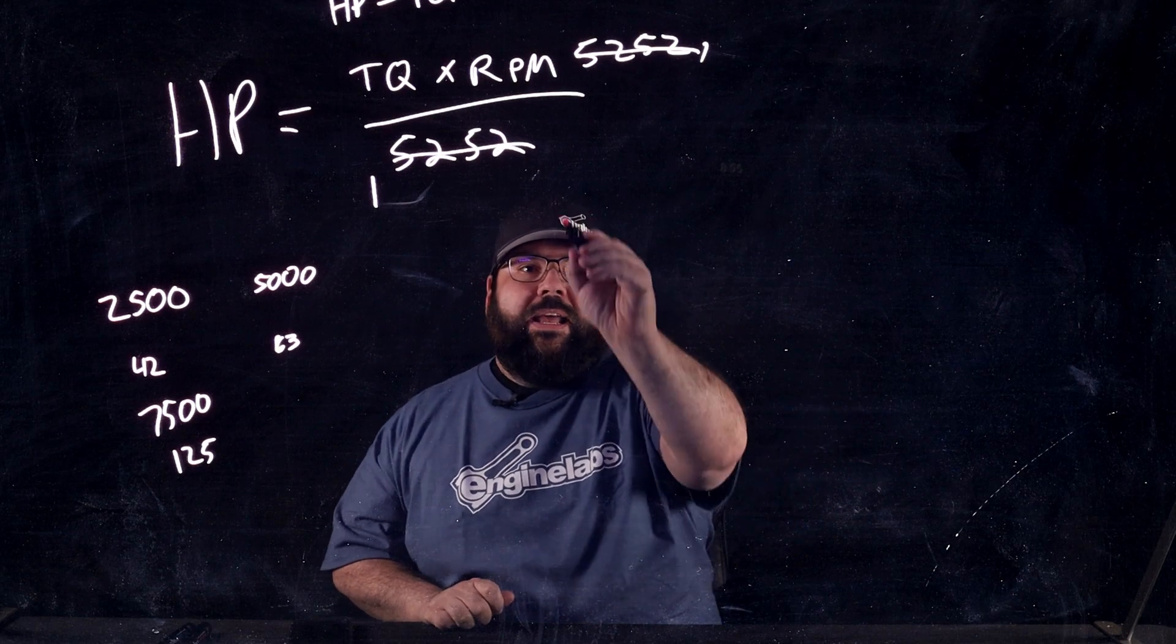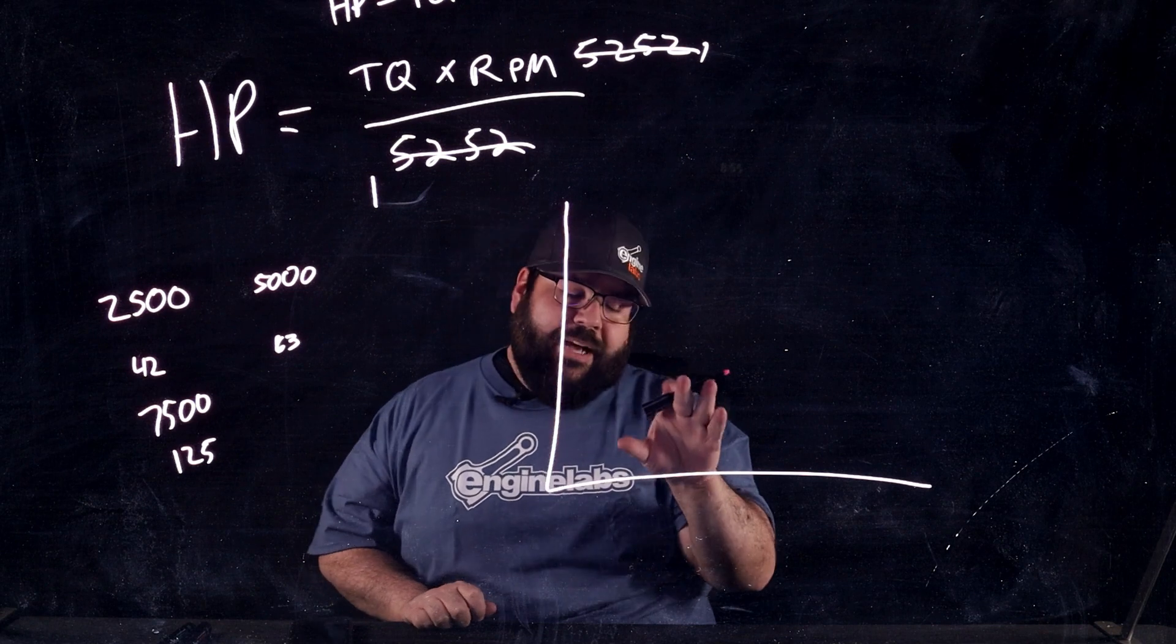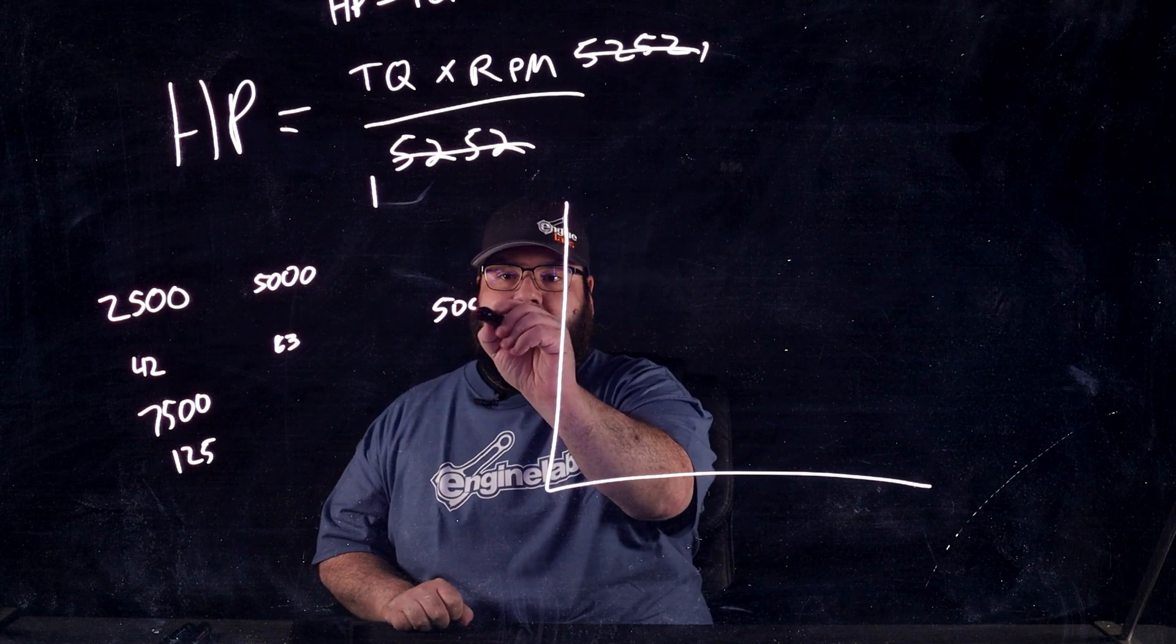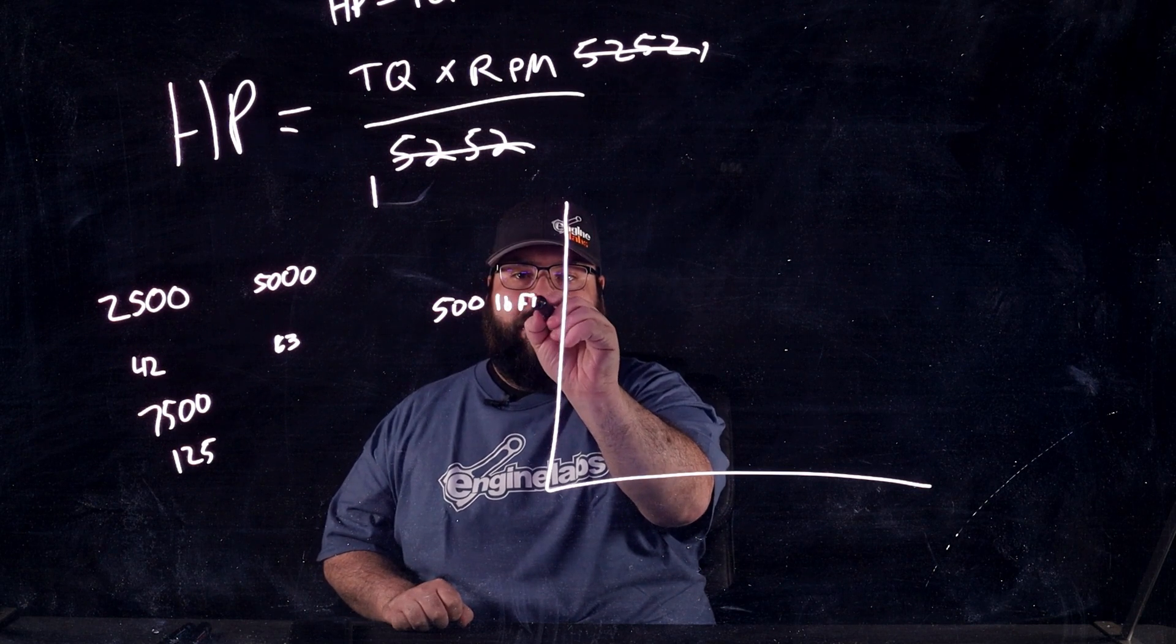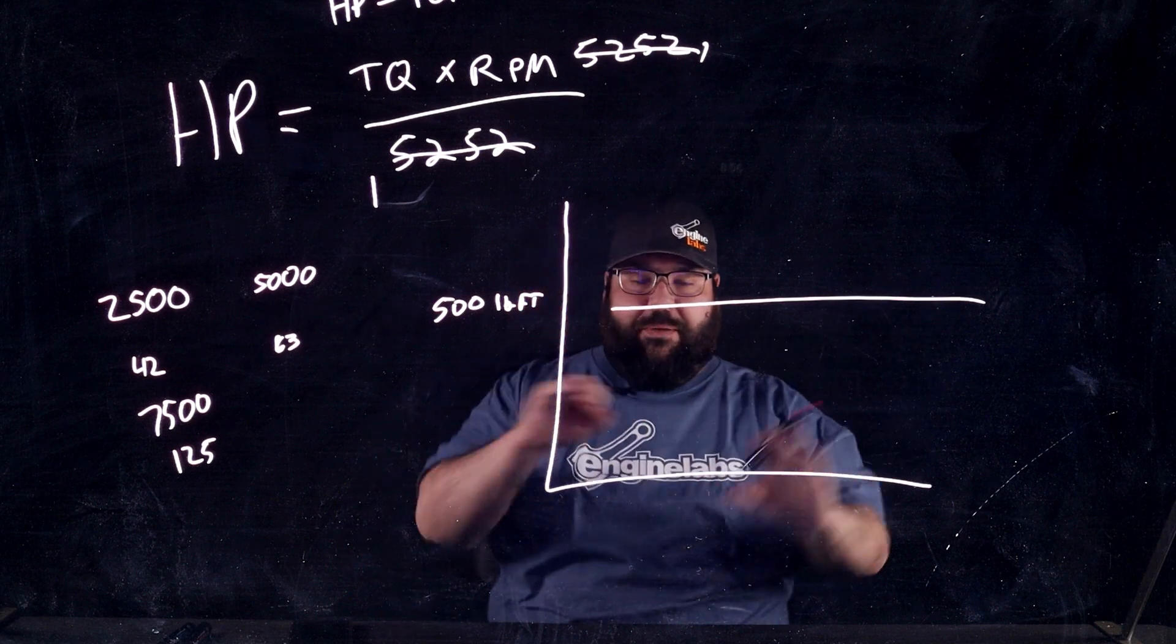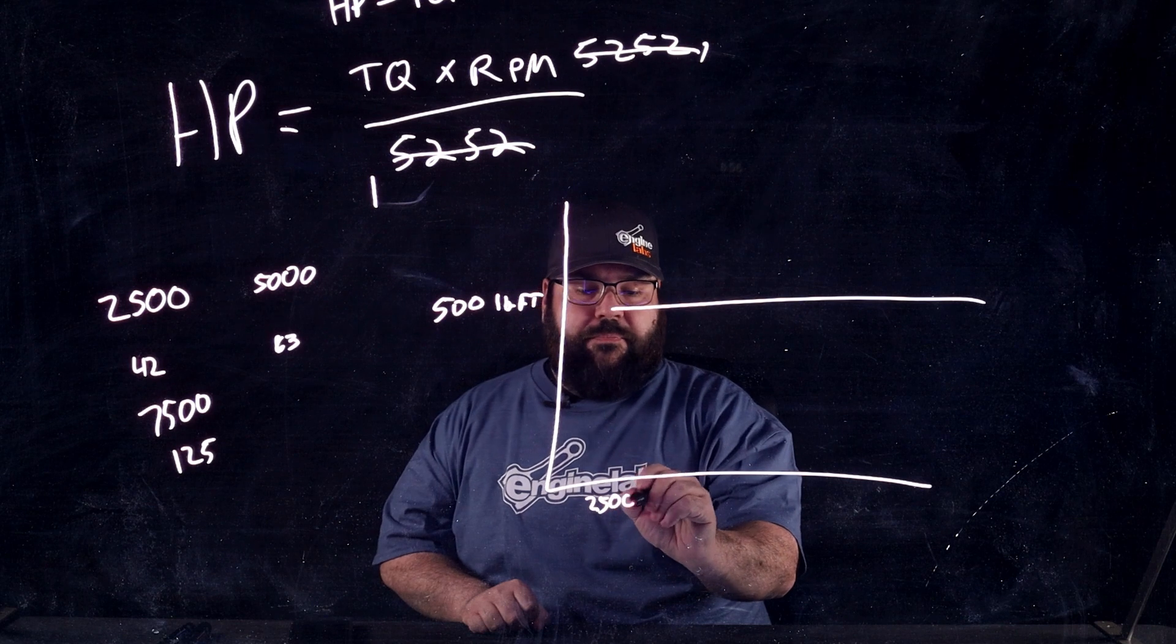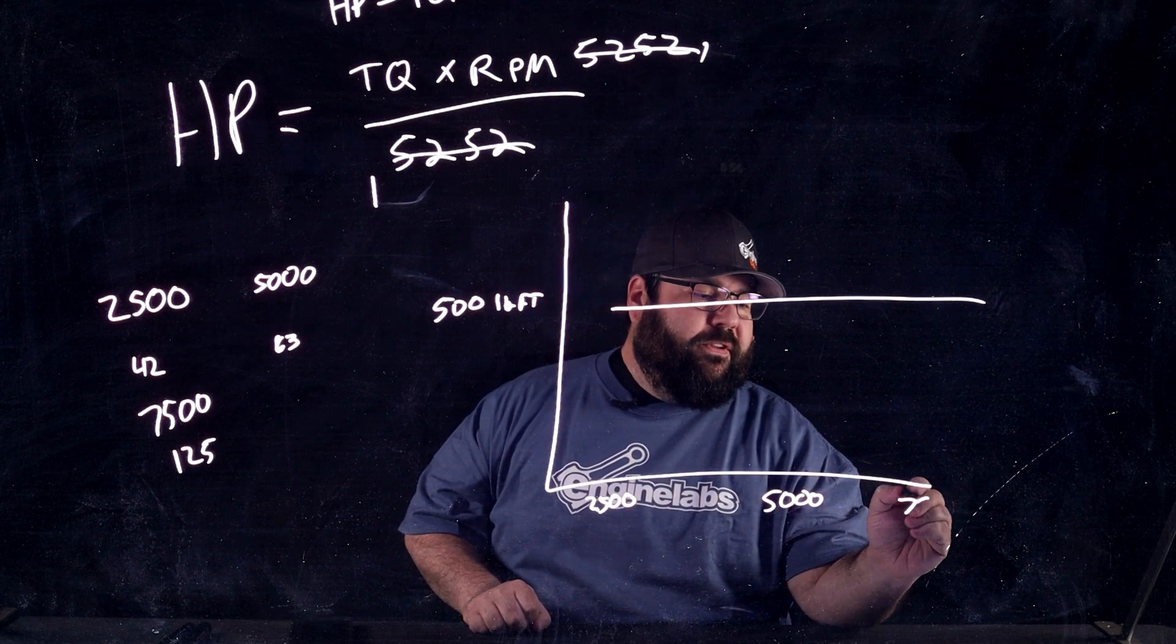So, let's go ahead and make believe a dyno graph. And we're going to say this magical engine, and I'm not going to say magical. I've seen an engine do this, but it's not very common. All right? So, there's 500 pound-feet of torque, right? And it's going to make a nice flat torque curve. I mean, wouldn't we all kill for this engine? So, here's 2500 RPM. Here's 5000 RPM. Here's 7500 RPM.